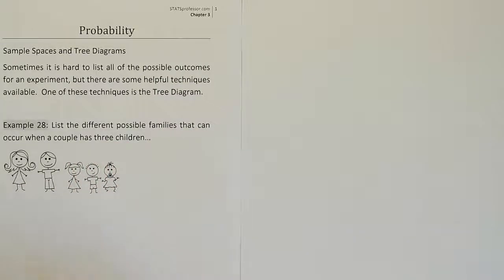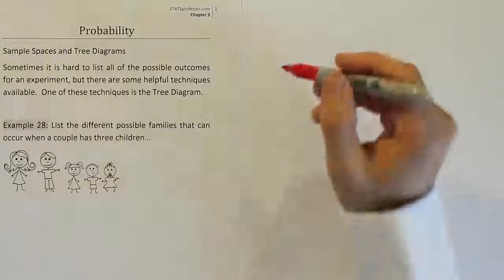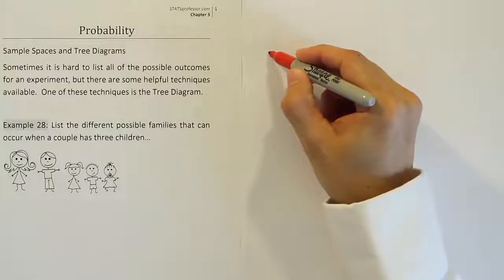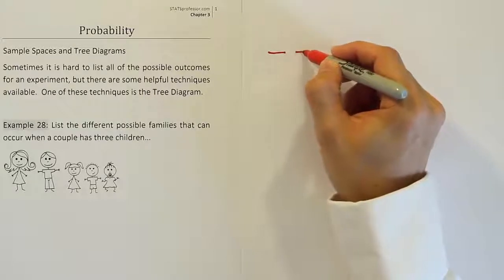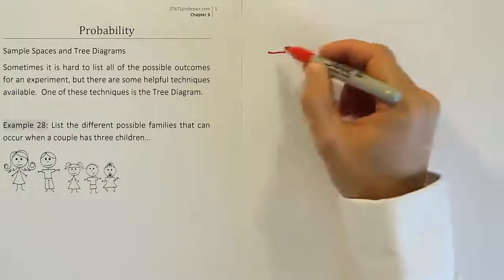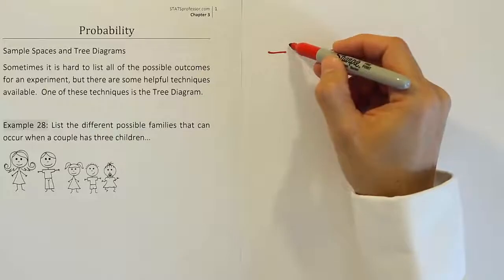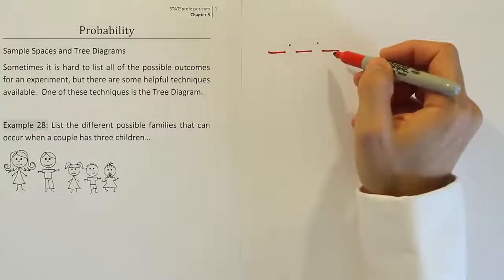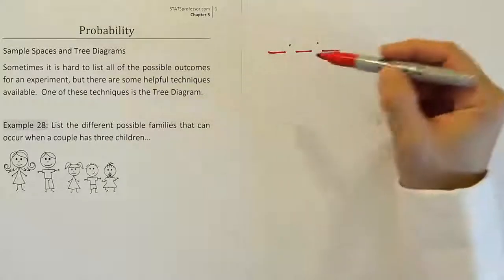Alright, so to do this we want to create a sample space and we're trying to think about the experiment itself. If a couple decides to have three children, each child is like an individual event. Each birth is an individual event. So we want to draw a space that represents each event. So we'll have a space like one, two, three. And this will essentially list all the different events that are occurring in the overall experiment of having three children.